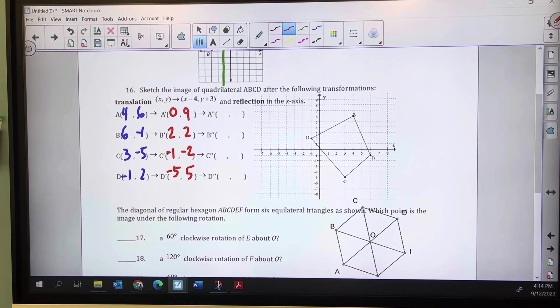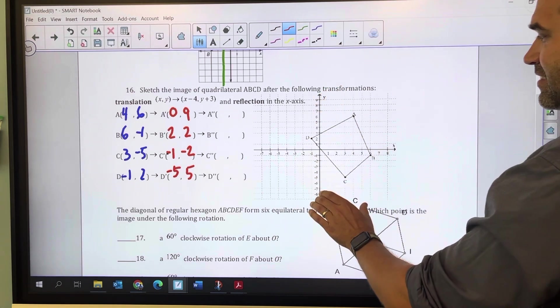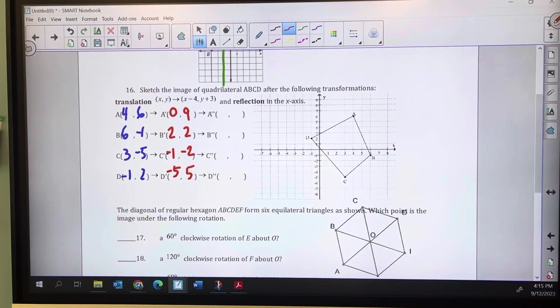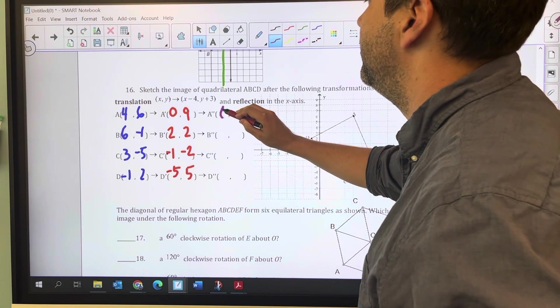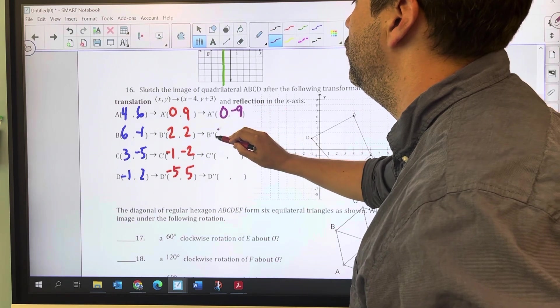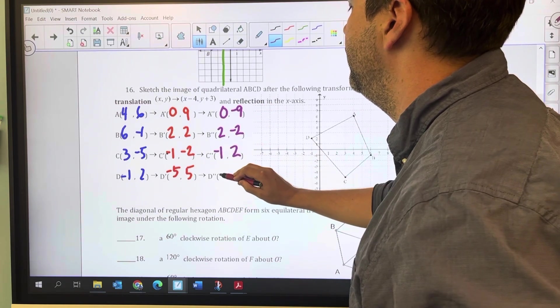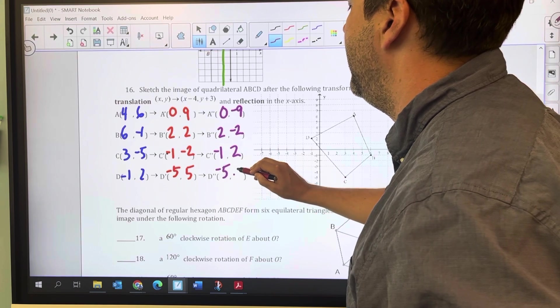Now I need to reflect those points across the x-axis. I can do this visually or use the rule we developed in class: reflection across the x-axis keeps the x and negates the y. So I get (0,-9), (2,-2), (-1,2), and (-5,-5).